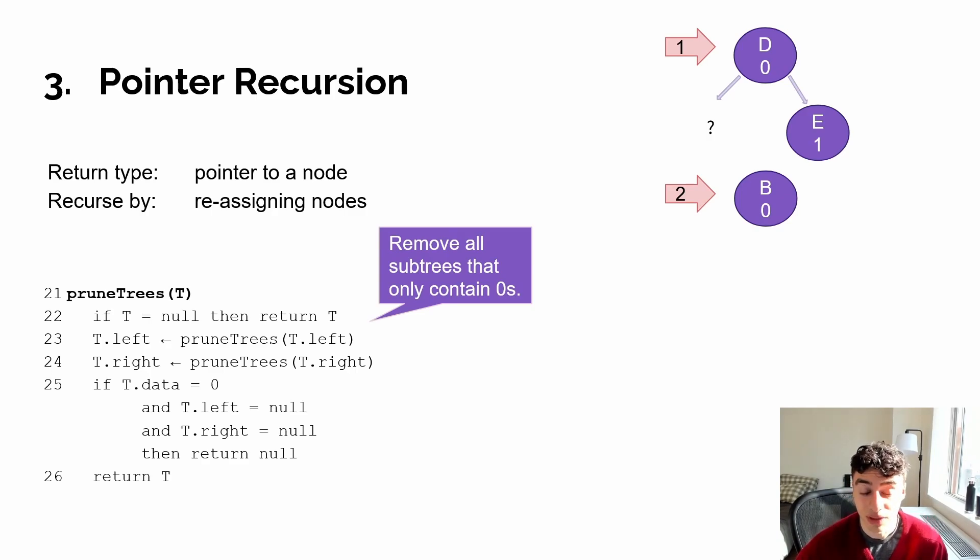Now B would be evaluated. If it's a leaf node, which it is because both A and C were removed from the tree, and if its value is zero, which it is, so it would also be returned as null, and frame two would be terminated. Now frame one can resume and set its left child to the result of frame two, which is null.